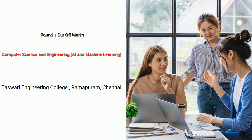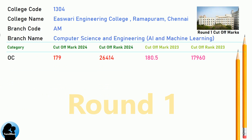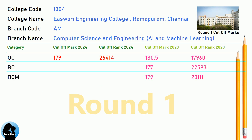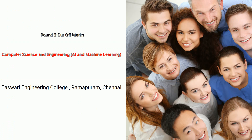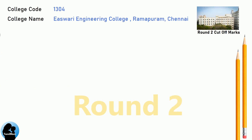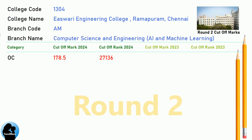DNA Round 1 Cut-Off for Eshwari Engineering College in Computer Science and Engineering, AI and Machine Learning. DNA Round 2 Cut-Off for Eshwari Engineering College in Computer Science and Engineering, AI and Machine Learning.